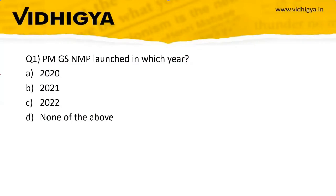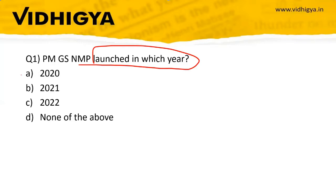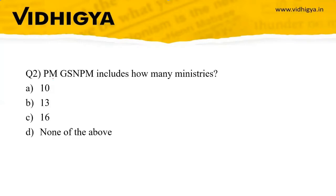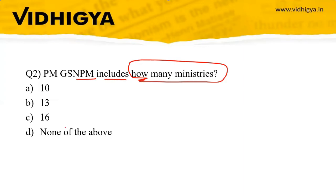Question 1: PM Gati Shakti National Master Plan was launched in which year? Options: 2020, 2021, 2022, none of the above. The correct option is 2021. Question 2: PM Gati Shakti National Master Plan includes how many ministries? Options: 10, 13, 16, none of the above. The correct option is 16.